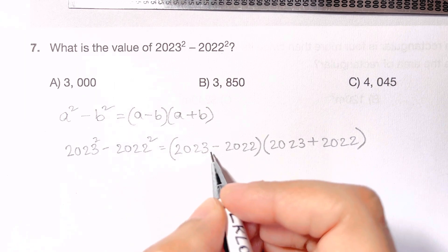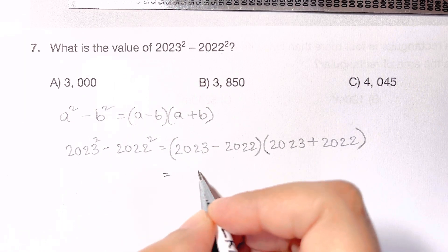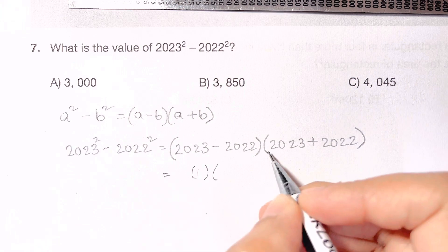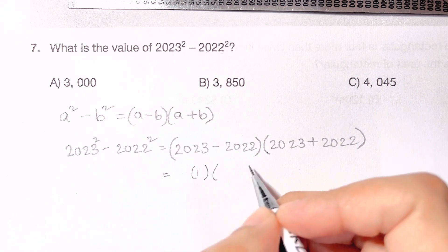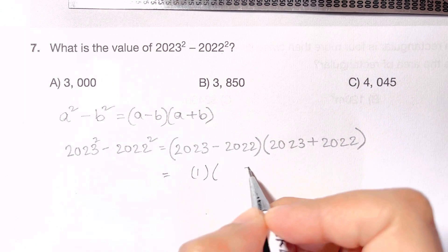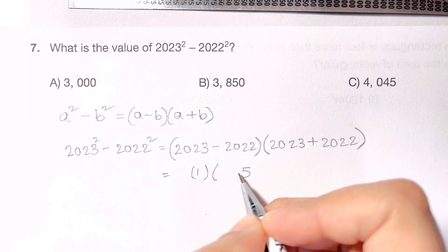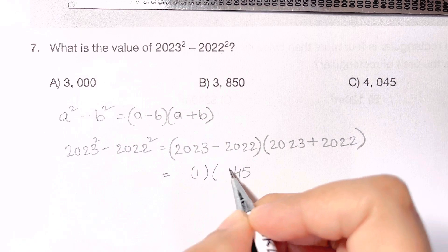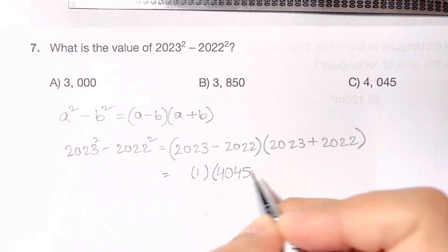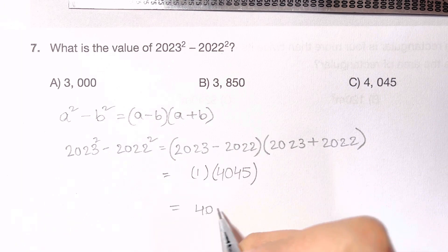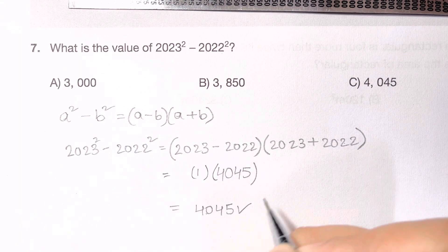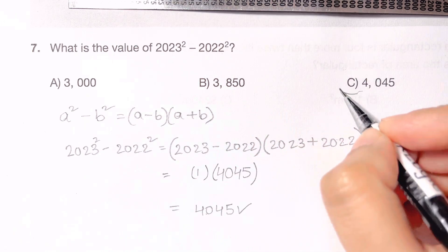Just solve it. 2023 minus 2022 is 1. And adding these two numbers, 2023 plus 2022 will give you 2 plus 3 is 5, 2 plus 2 is 4, 0 plus 0, 2 plus 2 is 4. So 4045 multiplied by 1 is 4045. That is your answer choice C.